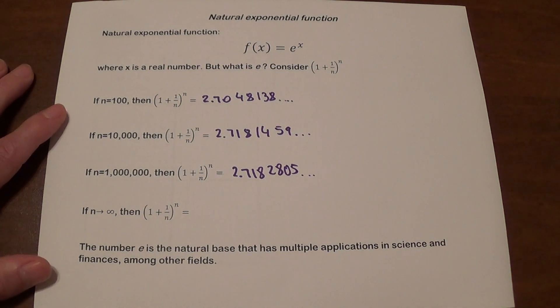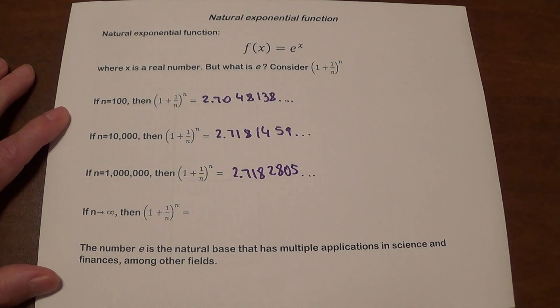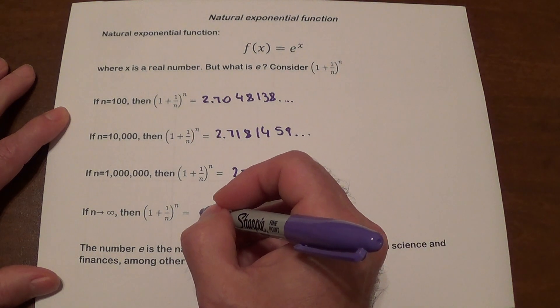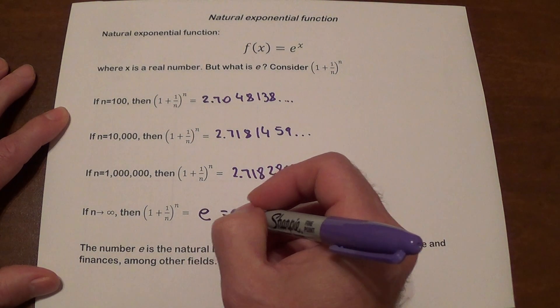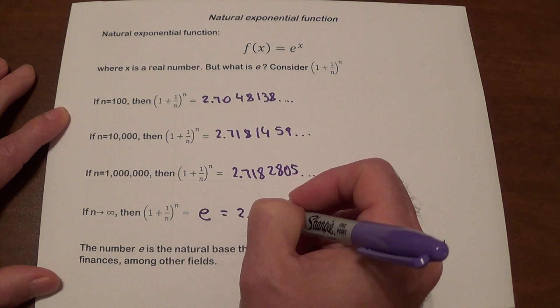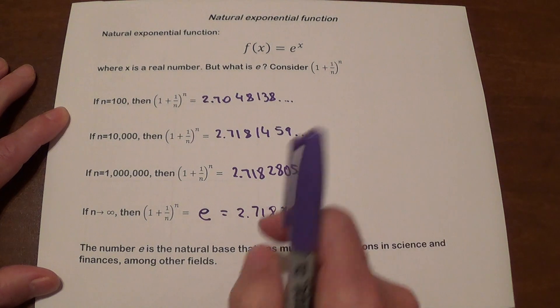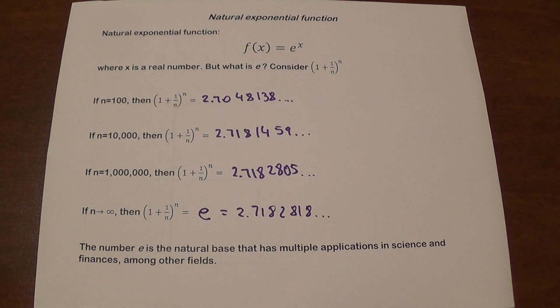So what happens if n is going to continue growing without bound or approach infinity? That number is going to approach e, which is approximately 2.7182818 and so on. So this is our number. It has a lot of applications in science, finances, and other fields.